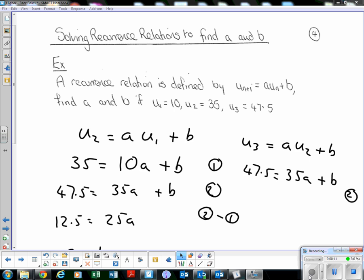We know a recurrence relation is defined by u_{n+1} = a*u_n + b. Here we're given the values of u_1 = 10, u_2 = 35, and u_3 = 47.5, and we're asked to find the values of a and b.